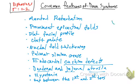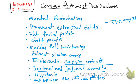Down syndrome is a trisomy of chromosome 21. You can see this in the karyotype. Those patients also have a risk to develop acute lymphoblastic leukemia.